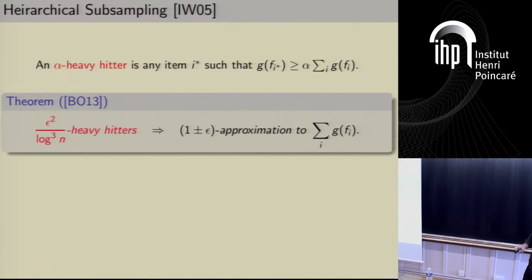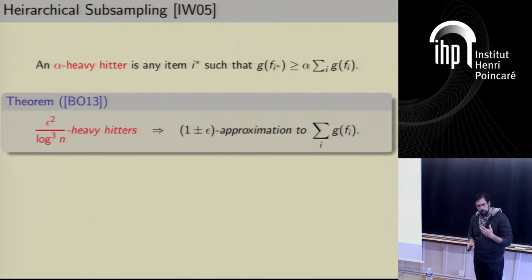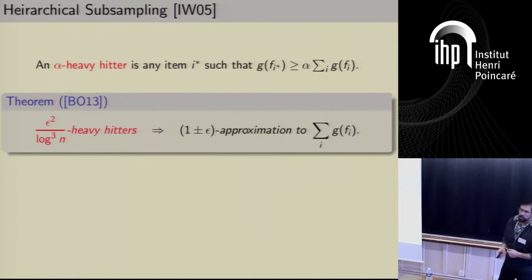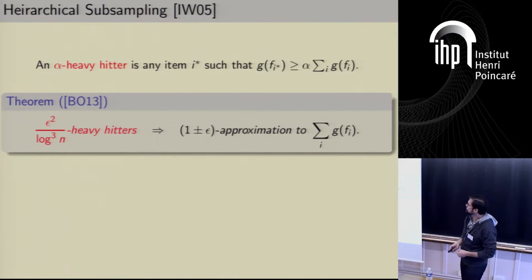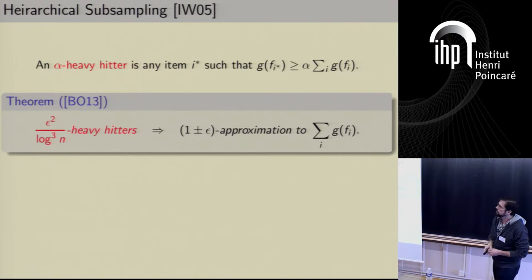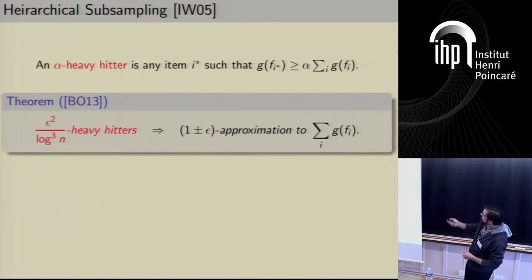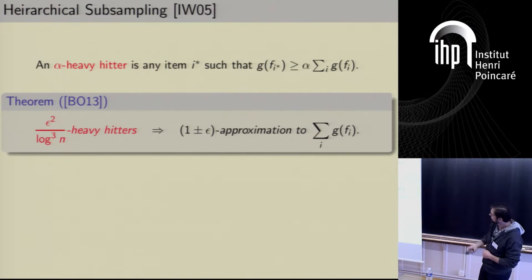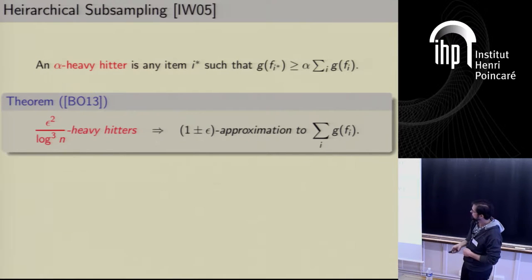To get intuition about why this works and how we get our algorithm, we use a hierarchical subsampling reduction that allows us to reduce from finding an approximation to the sum to finding so-called heavy hitters. An item is an alpha heavy hitter if its contribution to the sum is at least an alpha fraction of the total. If we can find heavy hitters, then we can output an approximation — I'll use this as a black box.